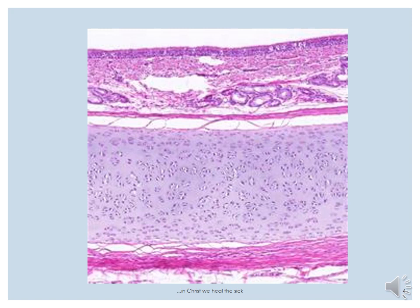Here is another slide of the trachea. We identify the cartilage — you can see how prominent it is with the isogenous cell groups and other features of the hyaline cartilage. Then we can identify the pseudostratified columnar epithelium, then the lamina propria, and then the submucosa that contains the seromucinous glands.